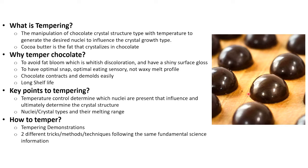Let's talk about what tempering is. It's the manipulation of chocolate crystal structure type with temperature to generate the desired nuclei to influence the crystal growth type. Cocoa butter in chocolate is the fat that crystallizes. Why do we temper chocolate? To avoid fat bloom — which is the whitish discoloration — to have a nice snap in our chocolate, to have all the sensory attributes we like: the visual shiny appearance, the nice melting profile in our mouth. From a manufacturing perspective, we want chocolate to contract, easily demold, and maintain a long shelf life.